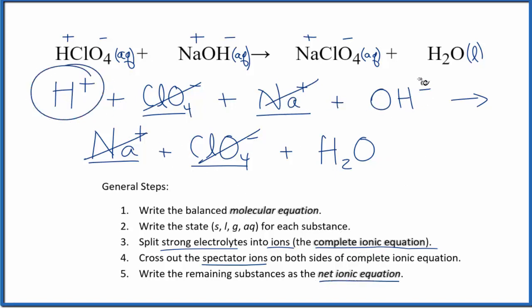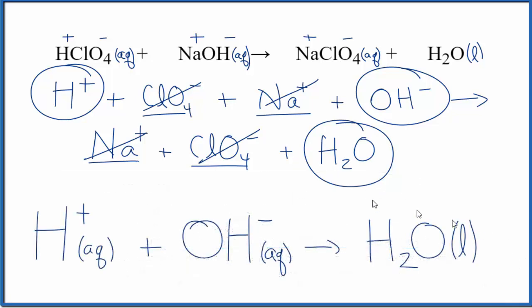here's H plus, OH minus, and H2O. So H plus plus OH minus yields H2O. Let's clean this up and write it out again here on the bottom. And this is the net ionic equation for HClO4 plus NaOH, perchloric acid plus sodium hydroxide.